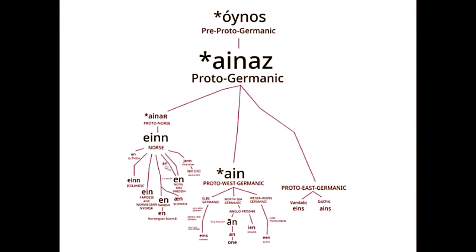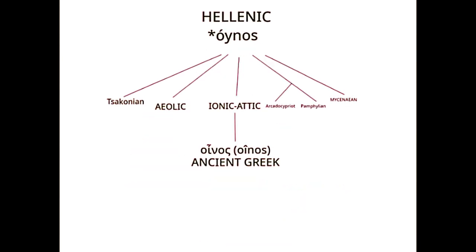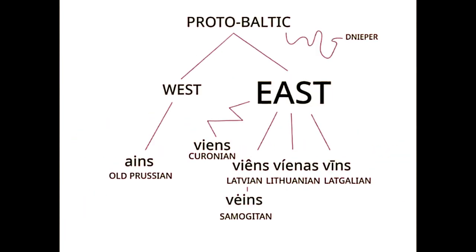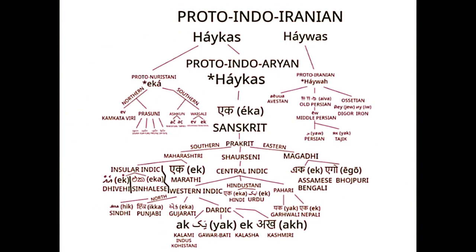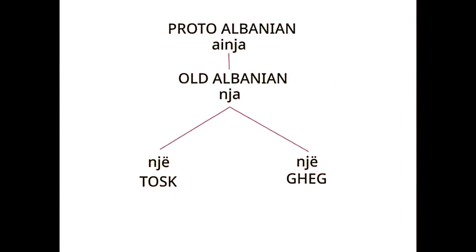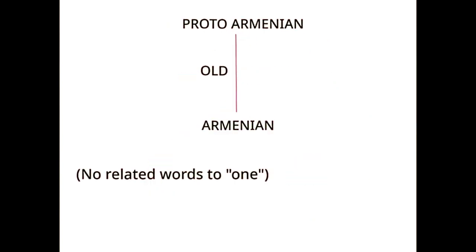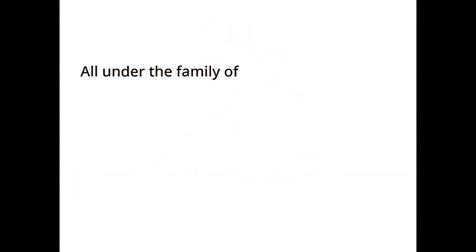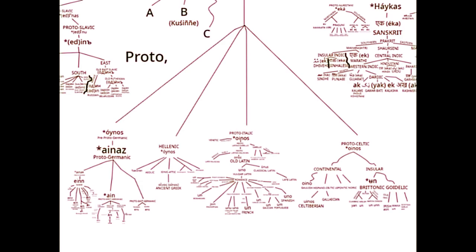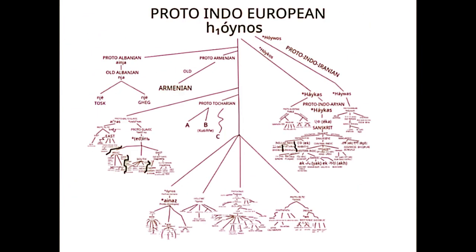But this is far from over, because this language is thought to be descended from the ancestor to the Hellenic, Italic, Celtic, Baltic, Slavic, Nuristani, Indo-Aryan, Iranian, Albanian, Armenian, and the extinct Tocharian — all under the family of Proto-Indo-European.